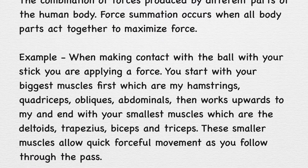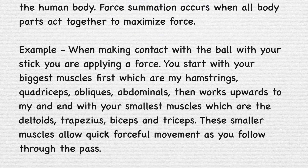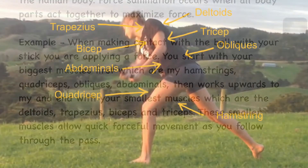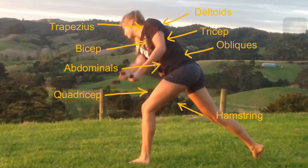For example, when making contact with the ball with your stick, you are applying a force. You start with your biggest muscles first, which are the hamstrings, quadriceps, obliques and abdominals. It then works up towards the smaller muscles, which in this case are the deltoids, trapezius, biceps and triceps. These smaller muscles allow quick, forceful movements as you follow through the pass.